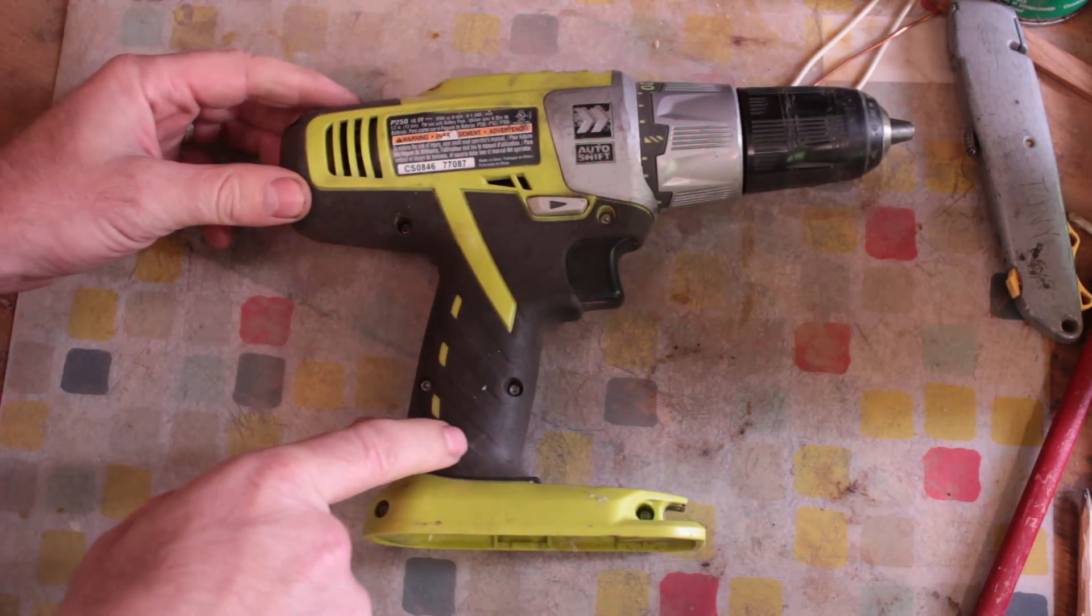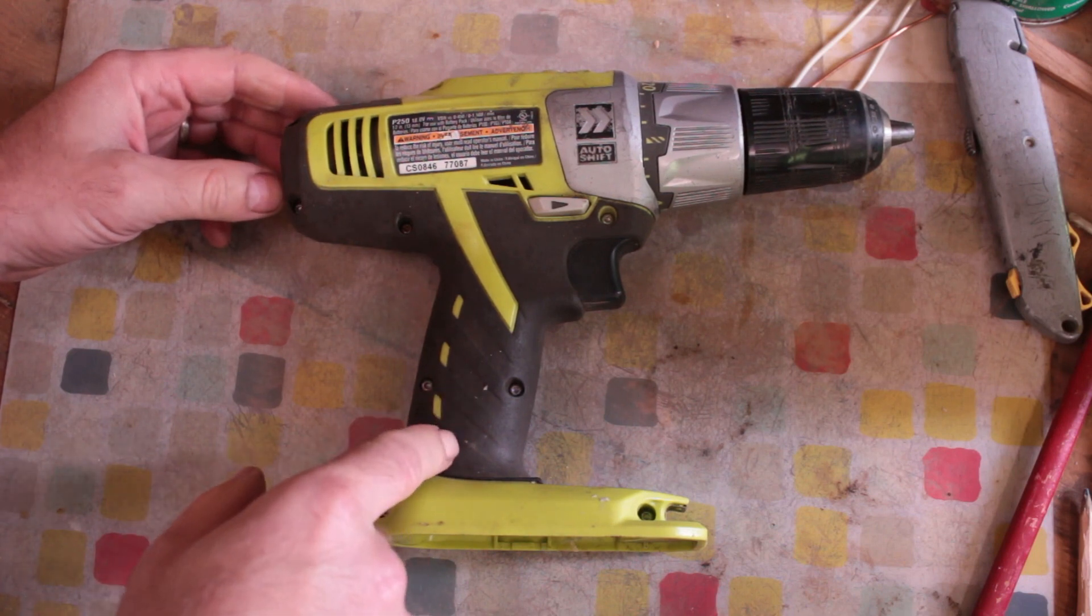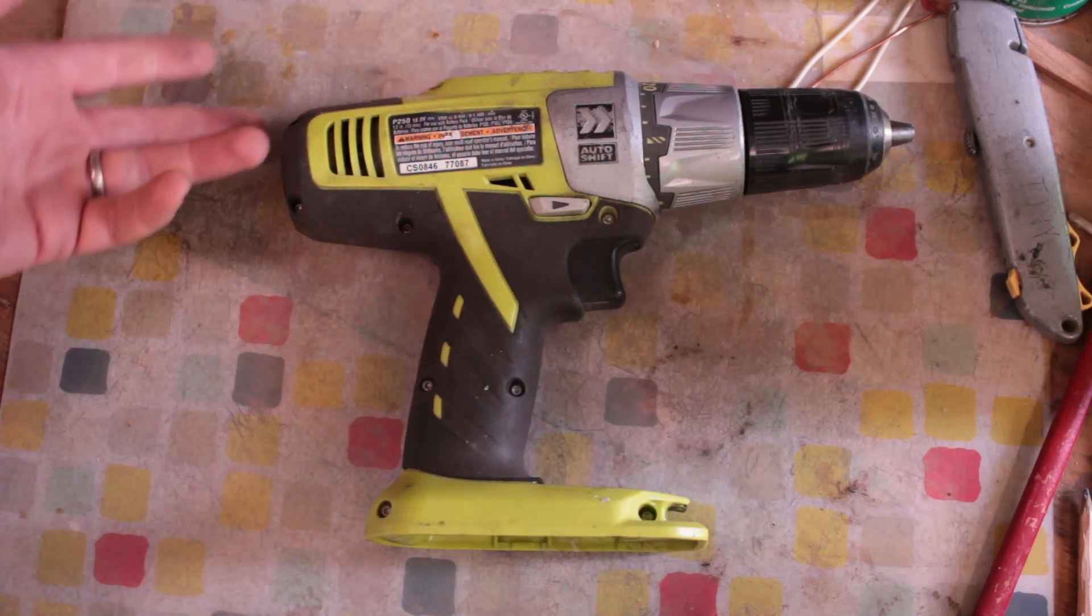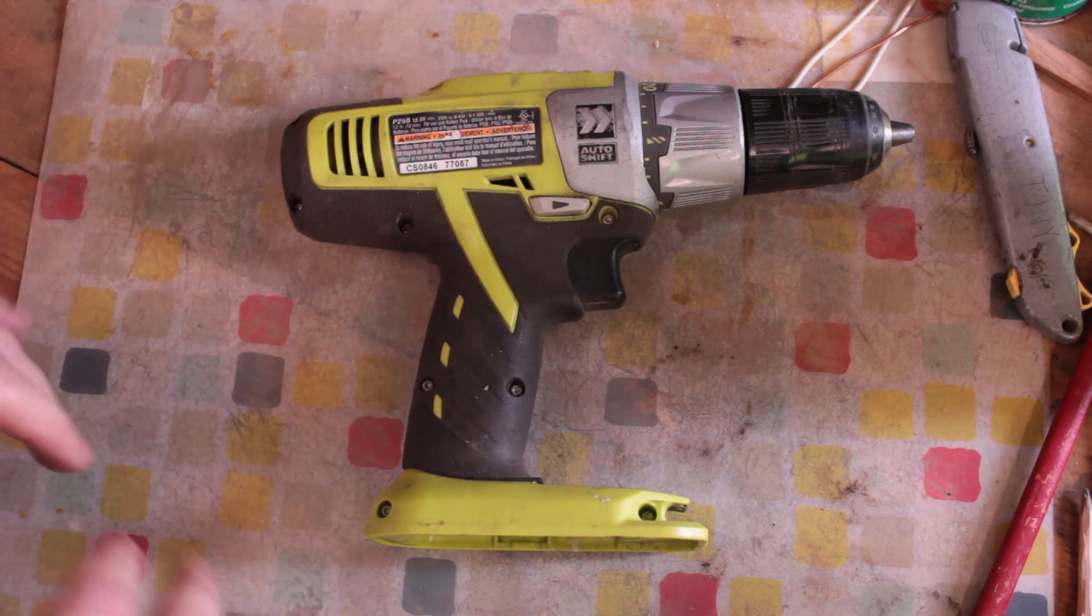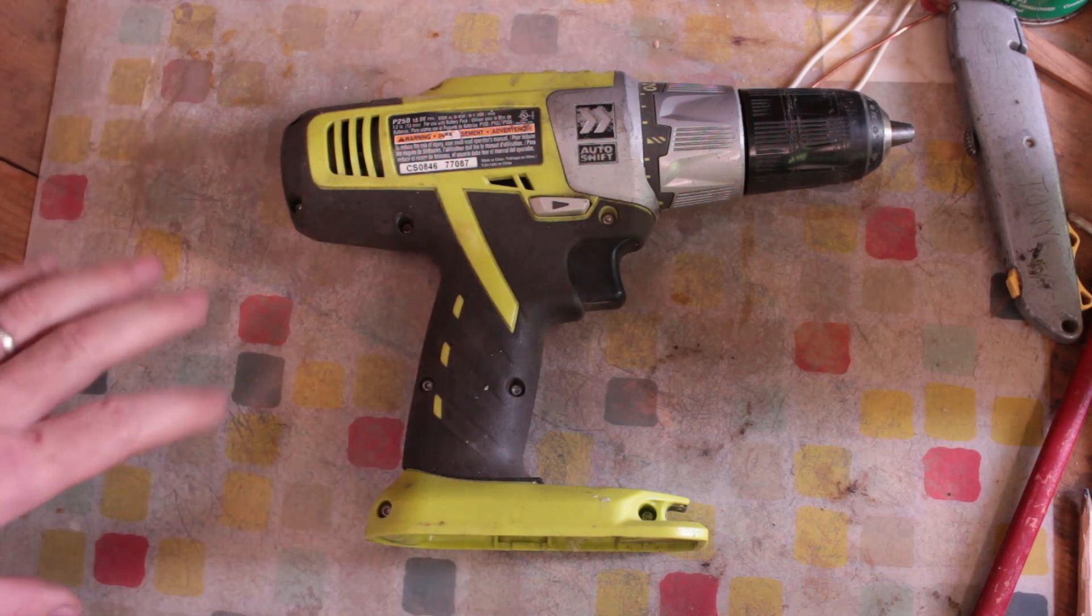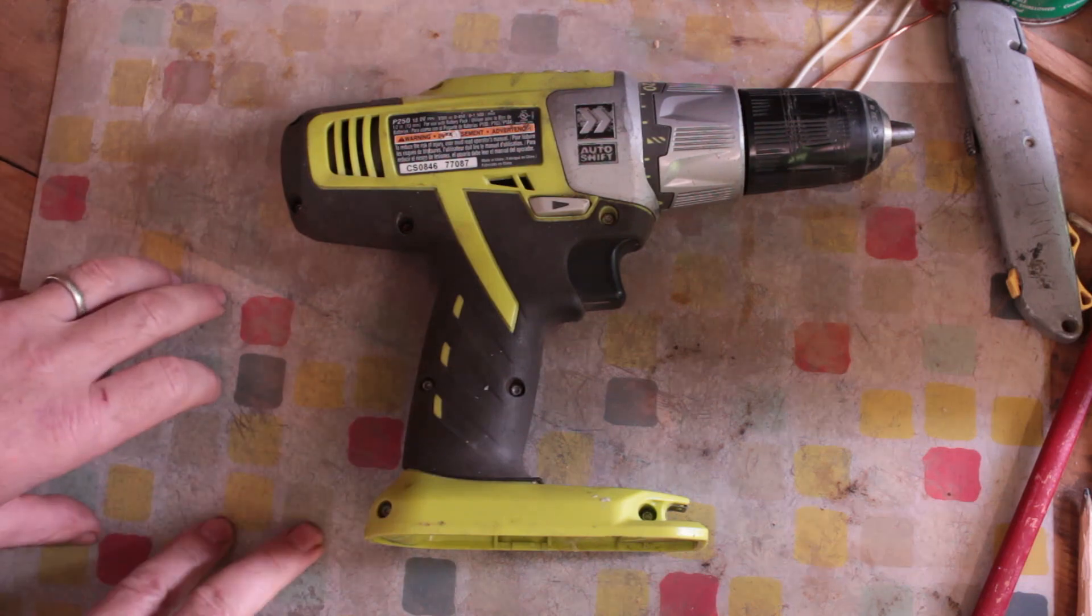So I'm going to take this apart and see how the auto shift mechanism works. I'm probably not going to try to fix it because what's the point in fixing a drill which is heavy and awkward and didn't work well when it was new. So this is mostly just out of curiosity about what's inside here.